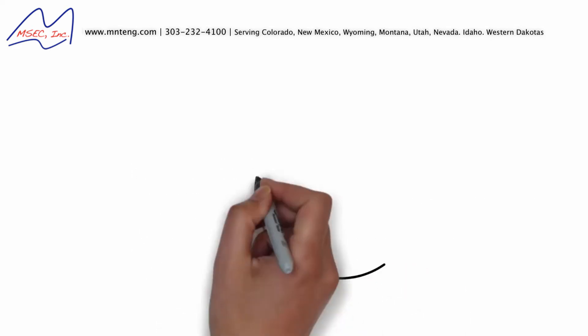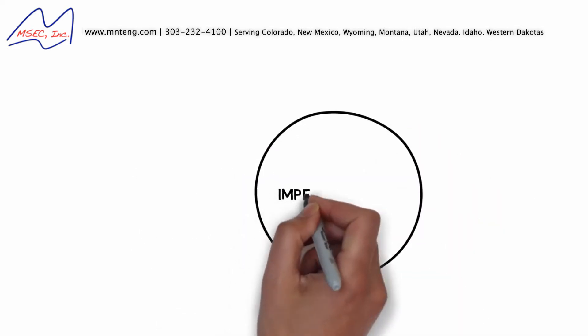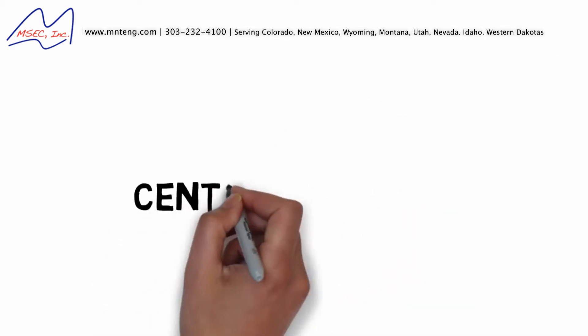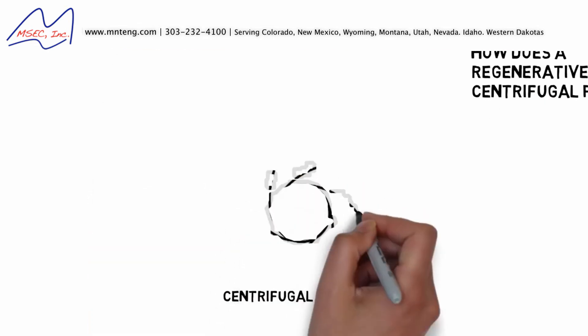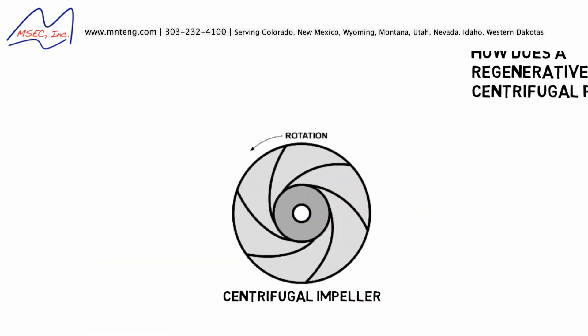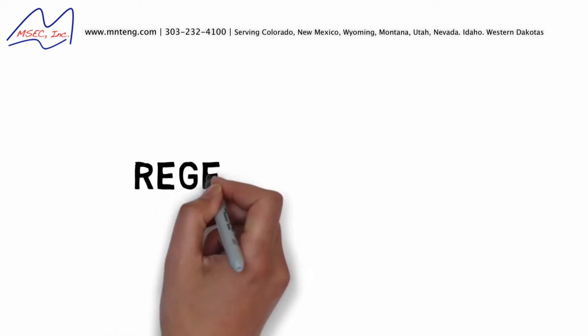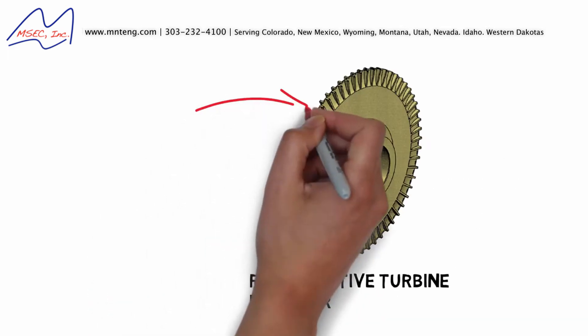The main difference between a regenerative turbine pump and a centrifugal pump is in the impeller. A standard centrifugal impeller has curved veins that extend from the center to the edge of the impeller. The regenerative turbine impeller has rows of veins on each side of the impeller's rim.